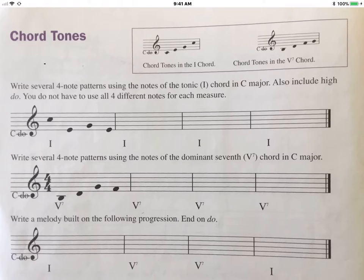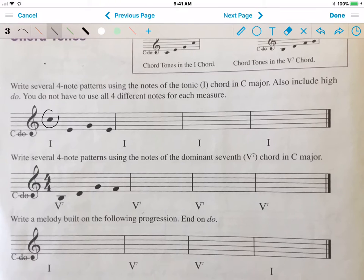You see the notes here. When you look up here, they're giving you the choices. It can't be more obvious than that. You're restricting yourself to those choices. You do not have to use all four different notes for each measure. So here's an example of what I mean.